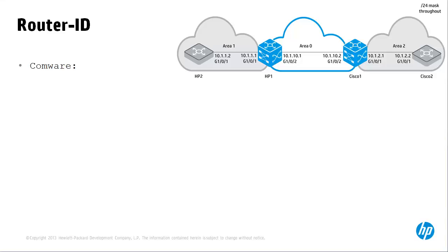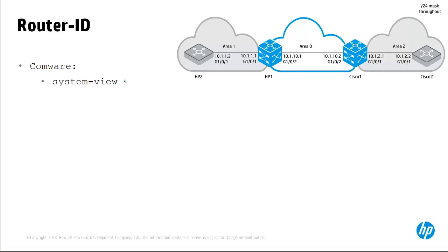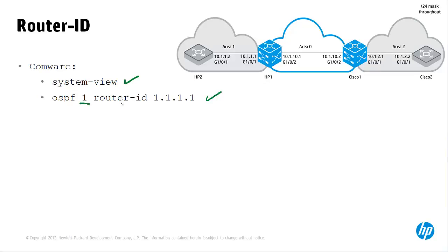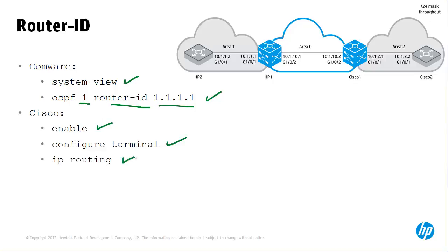To configure the router ID on Comware, type 'system-view', then 'ospf' and specify the process ID — in this case process ID 1 — and then specify the router ID, in this case 1.1.1.1. On Cisco, type 'enable', 'conf t', enable IP routing if it has not previously been enabled, configure OSPF with the process ID — in this case process ID 1 — and then specify the router ID. Router IDs uniquely identify routers in the OSPF domain and need to be unique throughout the OSPF domain.